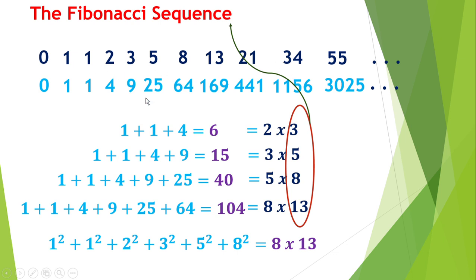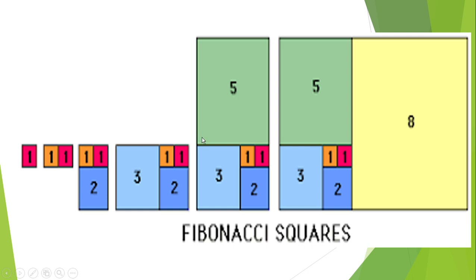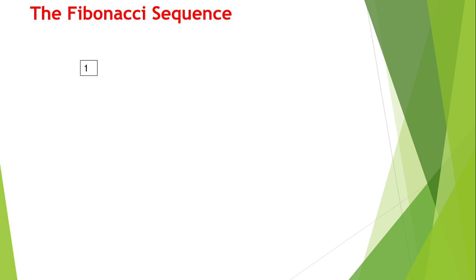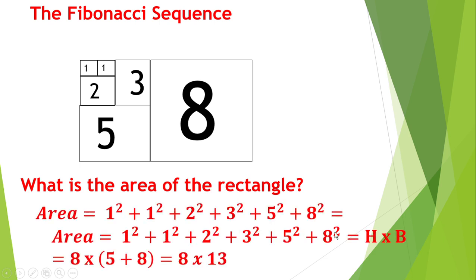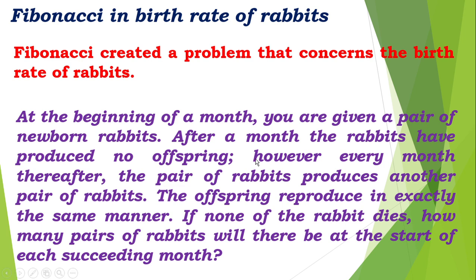This will be the Fibonacci squares. Zero plus one is one, one plus one is two, one plus two is three, two plus three is five, three plus five is eight. When we check this rectangle with squares - eight by eight, five by five, three by three, two by two, and one by one - what is the area of the rectangle? The height is eight. The length is five plus eight, that is thirteen. So we have eight by thirteen which is one hundred four.